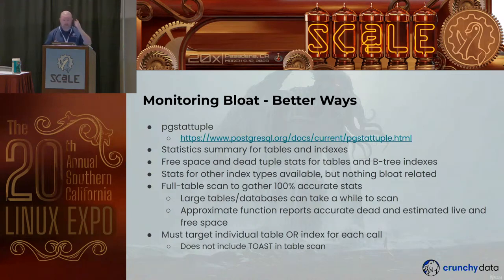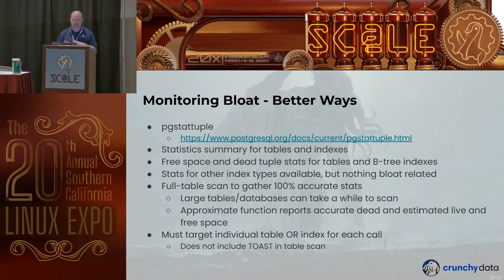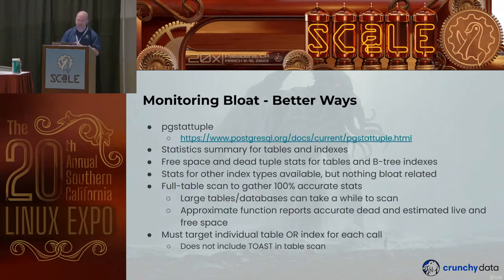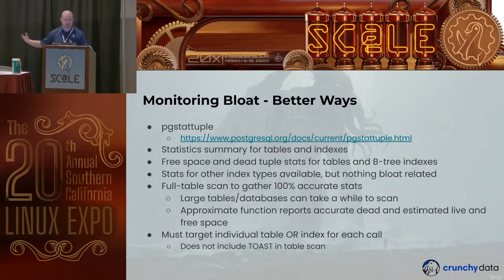pgstattuple does a full table scan to give you accurate statistics, which can take a while for large tables and large indexes. It does have an approximate function as well — it reports accurate dead tuple counts but estimates live and free space, which is significantly quicker for some large tables but not as accurate. If you're using this tool directly, you have to target each individual table and each individual index — so if your table has 15 indexes, you call it once for the table and 15 more times for each index, which can get tedious.